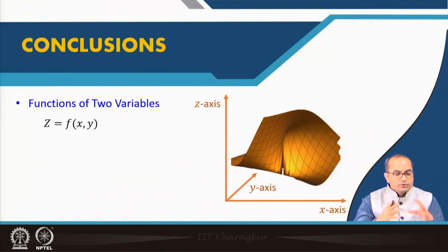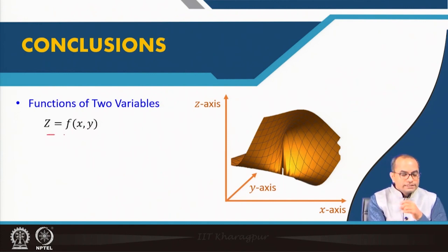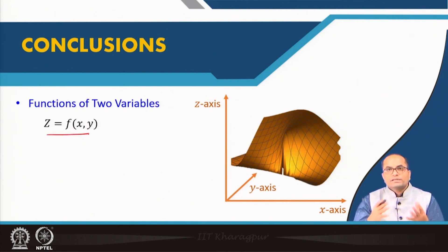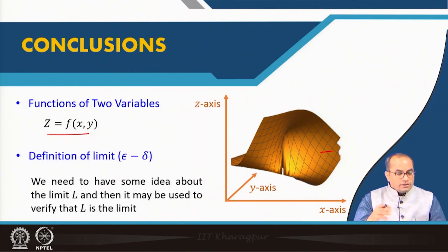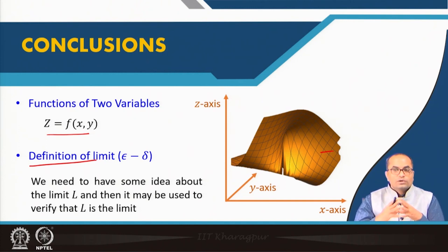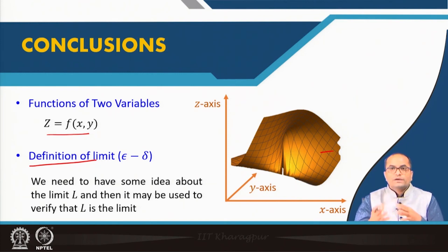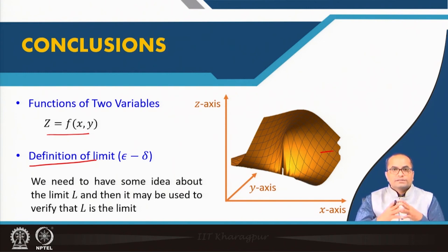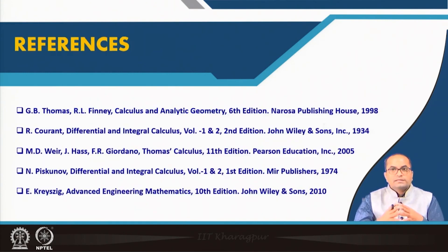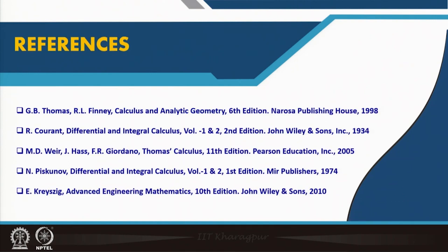To conclude: we have gone through functions of two variables z = f(x, y), which represent a surface in three-dimensional space. We discussed the epsilon-delta definition of the limit, which is very useful for theoretical purposes and for proving that a given number is the limit of a function. These are the references used for preparing this lecture. Thank you very much for your attention.